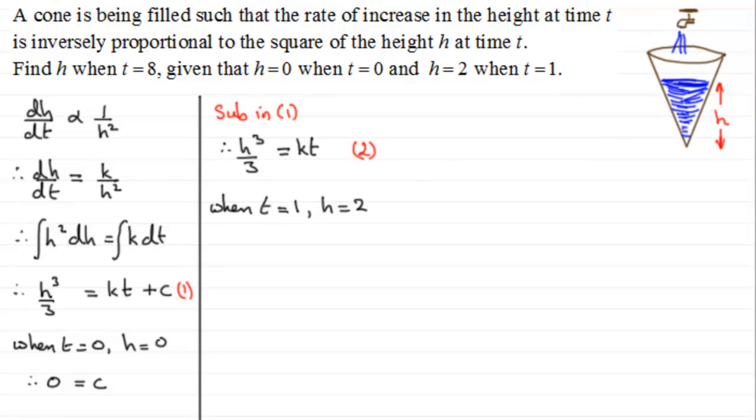If we do that, we have 2 cubed, which is 8, so we've got 8 over 3, 8 thirds, equals k times 1, which is just going to be k. So we end up with k equaling 8 thirds, and we can substitute that back into equation two.